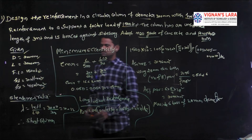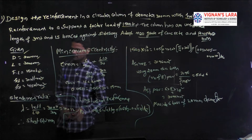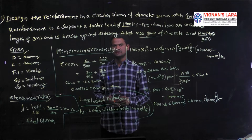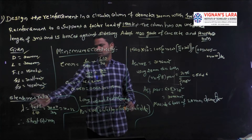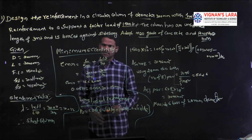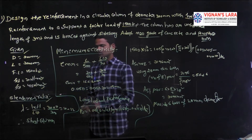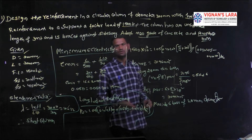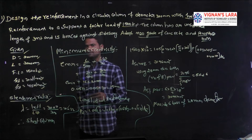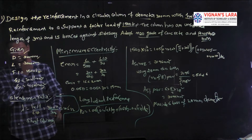Step 1: Calculate the slenderness ratio to determine whether the column is short or long. Slenderness ratio λ = effective length divided by least lateral dimension = 3000 divided by 300 = 10, which is less than 12. Hence the column is classified as a short column. When the slenderness ratio is less than 12 it is a short column; greater than 12 it is a long column.